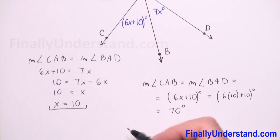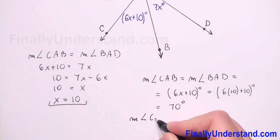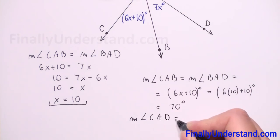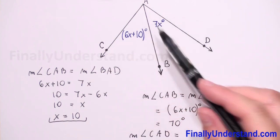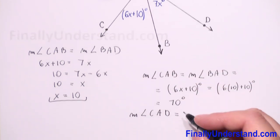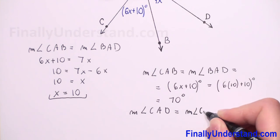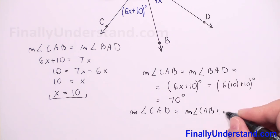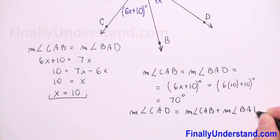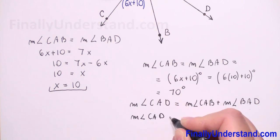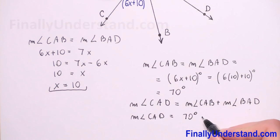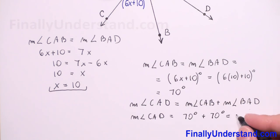Now we only need to find the measure of angle CAD. Since B is an interior point of angle CAD, the measure of angle CAD equals the sum of the measures of angle CAB plus angle BAD. Both are 70 degrees, so the measure of angle CAD is 70 plus 70, which equals 140 degrees. This is my solution.